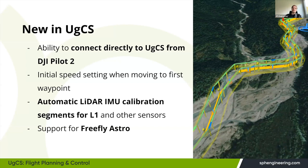In the newest version, UgCS 4.16, we finally added automatic IMU calibration segments for the DJI L1. You can see these as the blue points in the route image — these are the calibration segments. If you're flying with the L1 or any other lidar sensor, you now have this new function available.